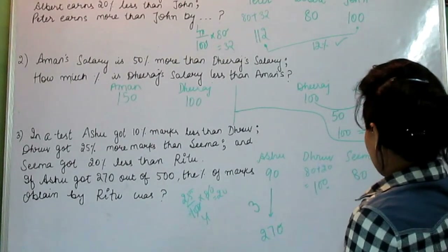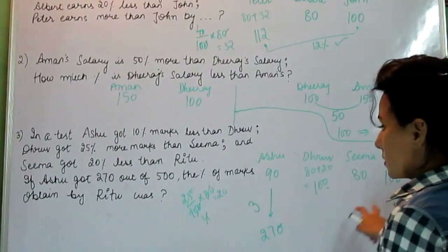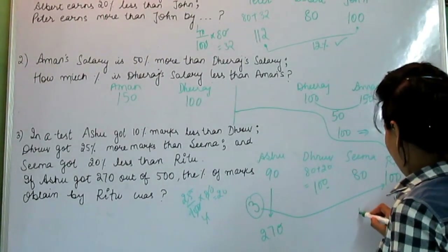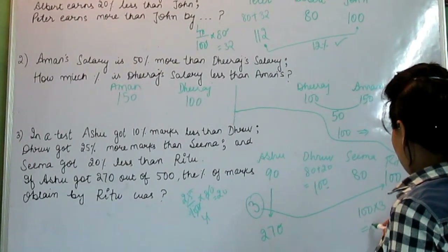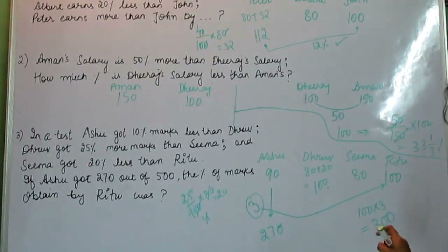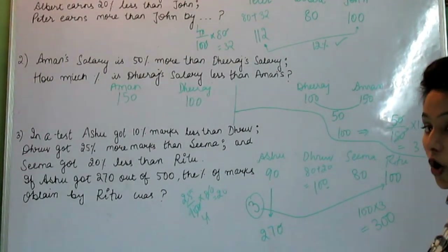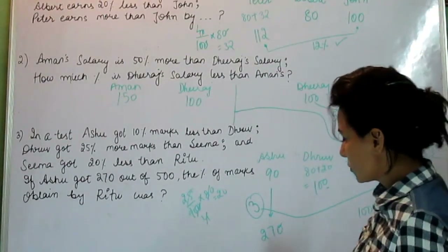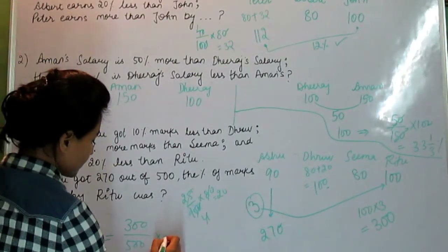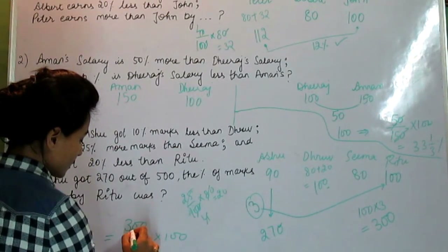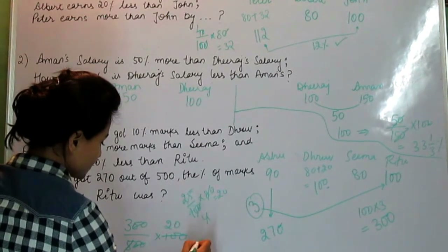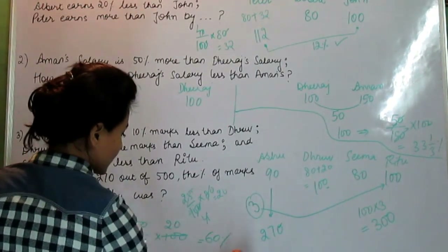270 is 3 times of 90 — these are the ratios. So if Ashu's value is 3 times 90, we multiply Ritu's value of 100 by 3 to get 300. So Ritu got 300 marks out of 500. The percentage is 300 divided by 500 into 100, which equals 60%. Ritu got 60% marks — this is the answer.